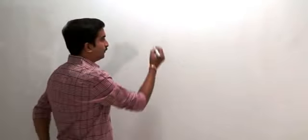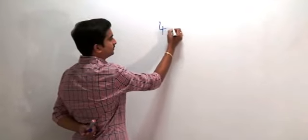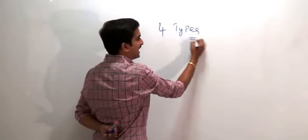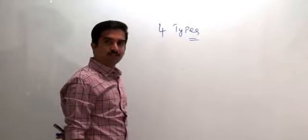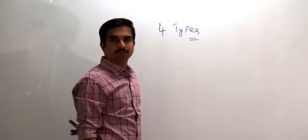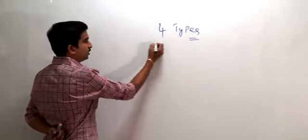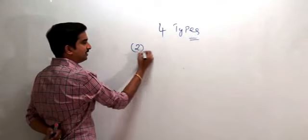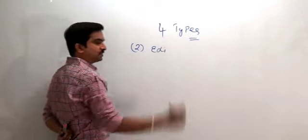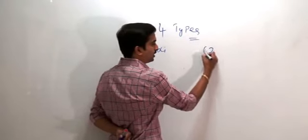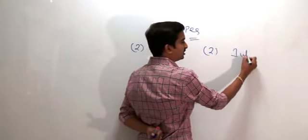Today our topic is amino acids as neurotransmitters in the central nervous system. There are four types of amino acids which act as neurotransmitters in the CNS — two are excitatory neurotransmitters and two are inhibitory neurotransmitters.